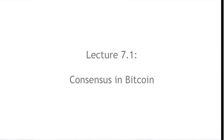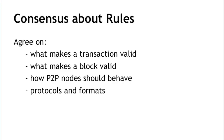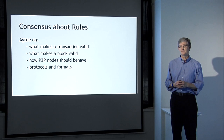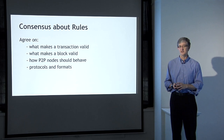In lecture 7.1 we'll talk about consensus in Bitcoin, the way that the operation of Bitcoin relies on the formation of consensus among people. Now there are really three kinds of consensus that have to operate for Bitcoin to be successful. The first kind is a consensus about the rules — things like what makes a transaction valid, how you can tell a valid transaction from an invalid one.